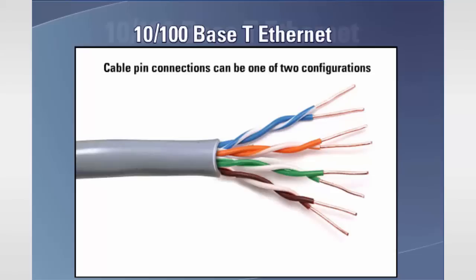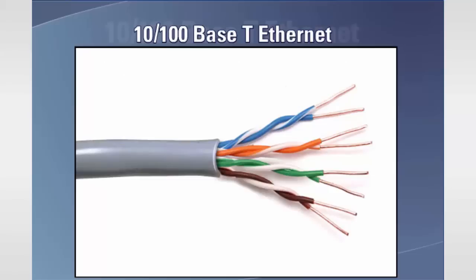The cable pin connections can be one of two configurations. The first is called a straight-through cable, and the second is called either a crossover or patch cable. Each wire within the cable has the following color code. For wire pair 1: one wire is white with blue bands, while the other wire is blue. For wire pair 2: one wire is white with orange bands, while the other wire is orange. For wire pair 3: one wire is white with green bands, while the other wire is green. For wire pair 4: one wire is white with brown bands, while the other wire is brown.